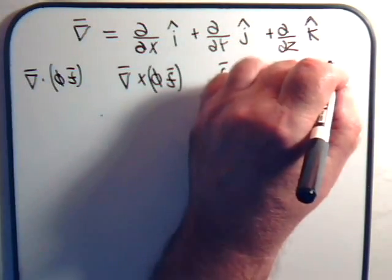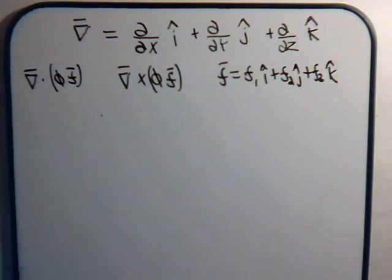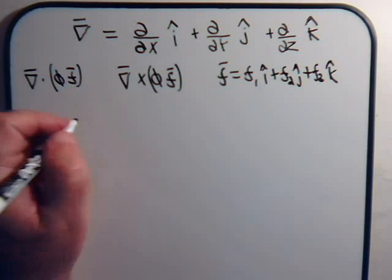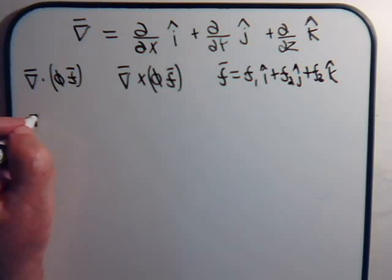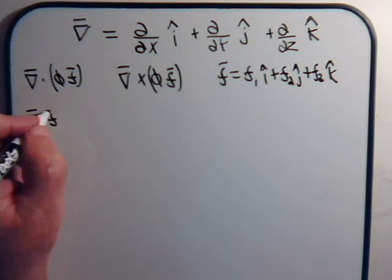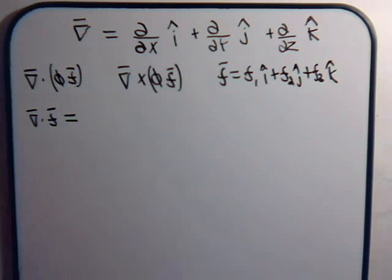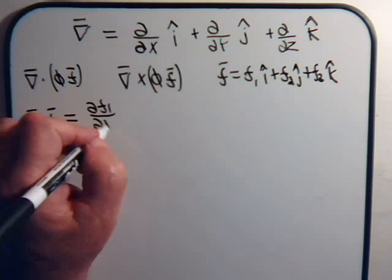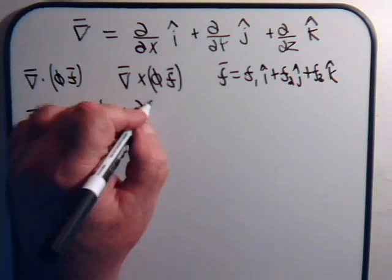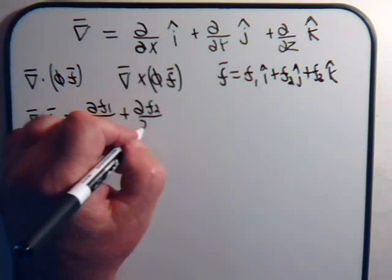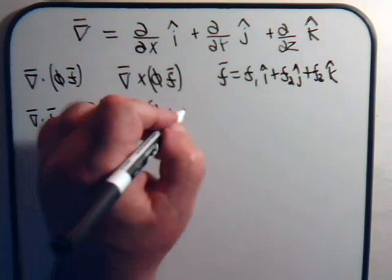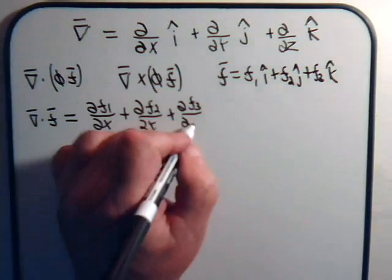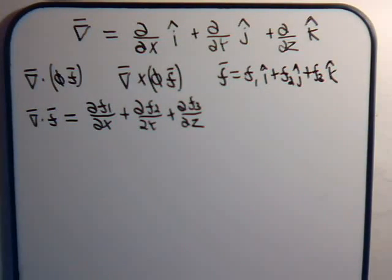With these components, f1, f2, and f3, these are not constant numbers. These are continuously changing. And you take the dot product of the del operator with that vector, you get what's called the divergence. And that has this expression. We have these partial derivatives. That's what we get.